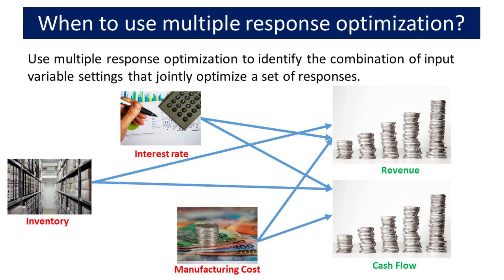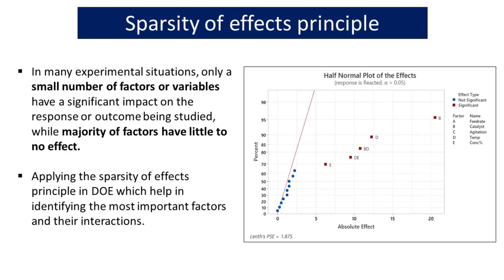Multiple-response optimization is a powerful tool used to identify the best combination of input-variable settings that collectively optimize a set of responses. This approach allows us to consider multiple objectives simultaneously, rather than optimizing each response separately. In the field of experimental design, the sparsity of effects principle plays a crucial role in identifying the most influential factors. This principle acknowledges that only a small number of factors significantly impact the outcome, while the majority have minimal to no effect. By applying this principle in DOE, researchers can efficiently allocate resources and focus on the most important factors.